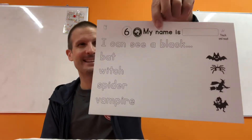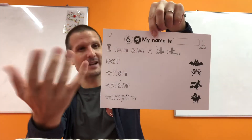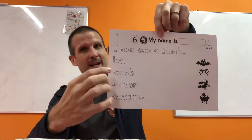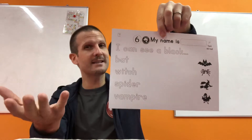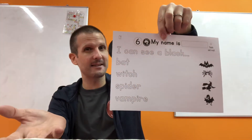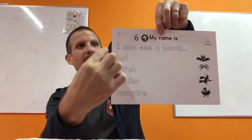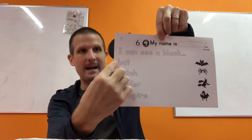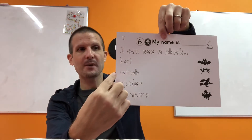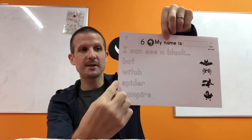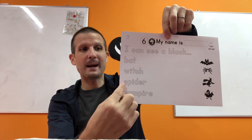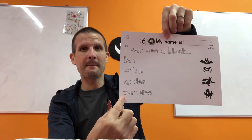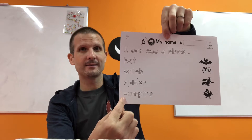Okay, this is the same as yesterday actually, but the word order has changed. So reading skills, reading skills. I can see a black bat, witch, spider, vampire.